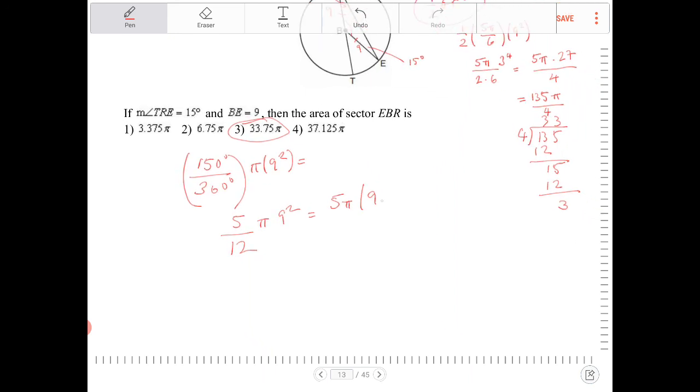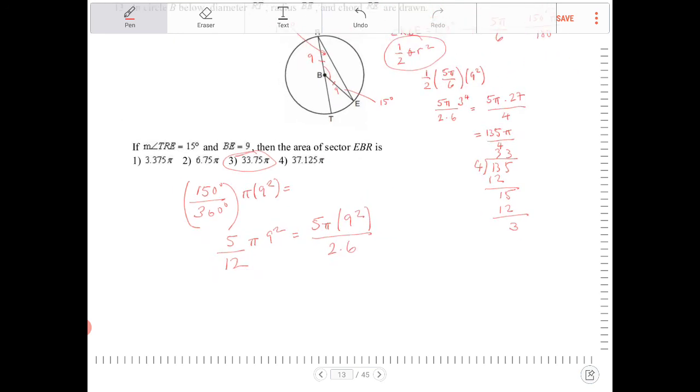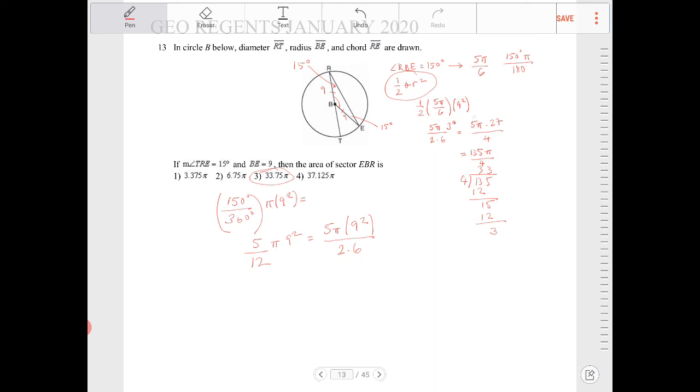So that's the same thing as 5 times 9 squared over 2 times 6, right? So you see here, the work is actually the same as I had before. So it ends up being the same thing. This is the same thing as 135 pi over 4. We end up in the same place.